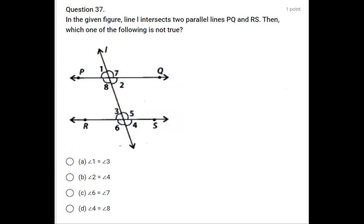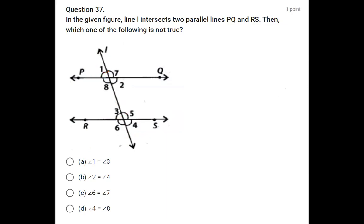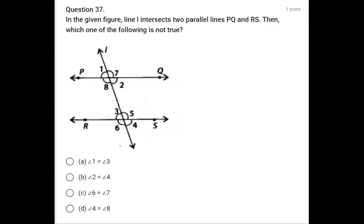The first statement says angle 1 equals angle 3. These are corresponding angles, and when two parallel lines are intersected by a transversal, corresponding angles are equal — so this is correct. The second option says angle 2 equals angle 4. These are also on the same side of the transversal and form corresponding angles, so this is also correct.